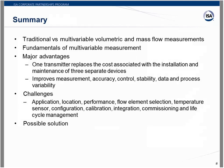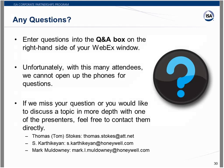In summary, we've covered traditional versus multivariable volumetric and mass flow measurements, the fundamentals of multivariable measurement, and the major advantages: one transmitter replaces the cost of installing and maintaining three separate devices, and improves measurement accuracy, control stability, data, and process variability. Challenges discussed include application selection, sensor location, performance requirements, flow element selection, temperature sensor selection, configuration, calibration, system integration, commissioning, and lifecycle management. We also discussed practical solutions including the heat exchanger and batch processing examples. I'll turn it over to Michaela for the Q&A period.